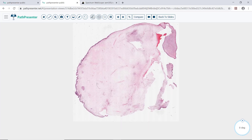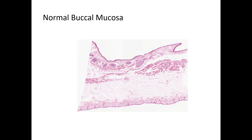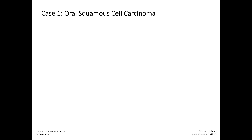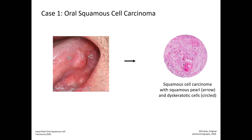Moving to the summary slides: the first slide is normal tongue, reviewed in a separate video. The second is normal buccal mucosa, reviewed in the same video as the tongue. The third is normal parotid gland, reviewed in a separate video. Case 1 is oral squamous cell carcinoma — the gross picture shows arrows pointing to a mass on the side of the tongue with a small ulcer on top. On histology you can see the squamous cell carcinoma with the squamous pearl and dyskeratotic cells.